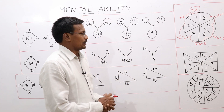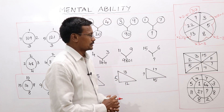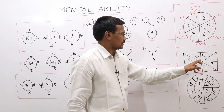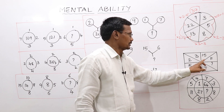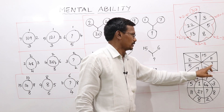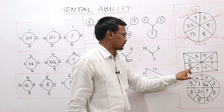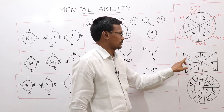Here we have a rectangle. If we have a number of numbers, we have: 15, 11, 7, 5, 2, 3.